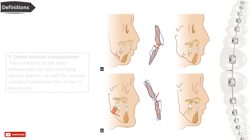Dento-alveolar compensation, or camouflage, means the inclination of the teeth compensates for the underlying skeletal pattern so the occlusal relationship is less severe. For example, in Class 2, the upper incisors become upright or retroclined and the lower incisors become proclined. In Class 3, where the mandible is protruded, the upper incisors become proclined and the lower incisors become upright or retroclined.